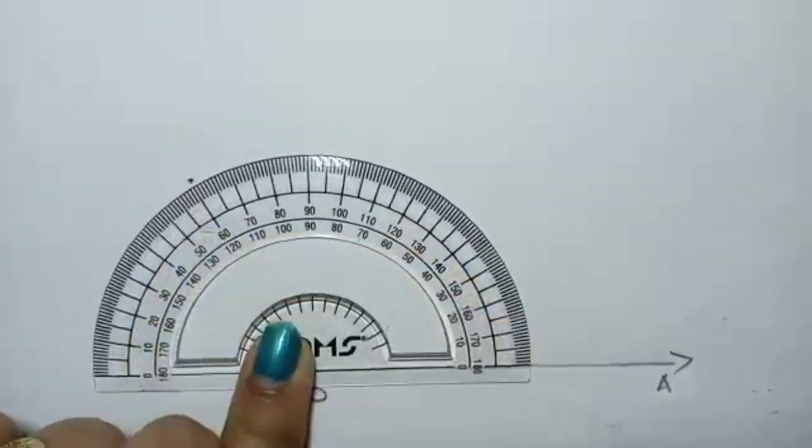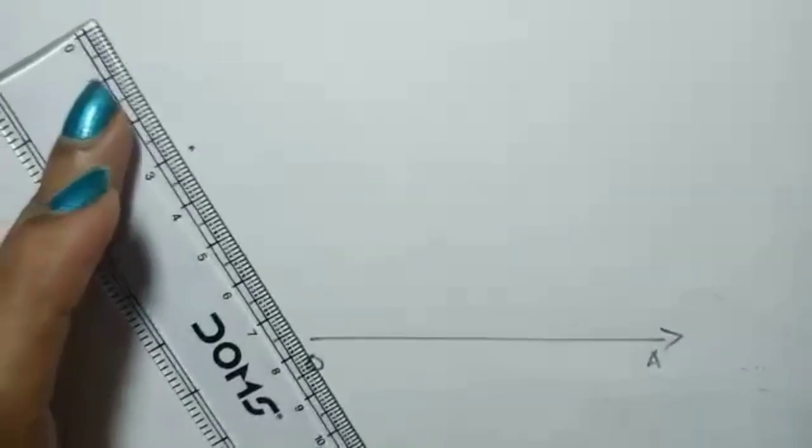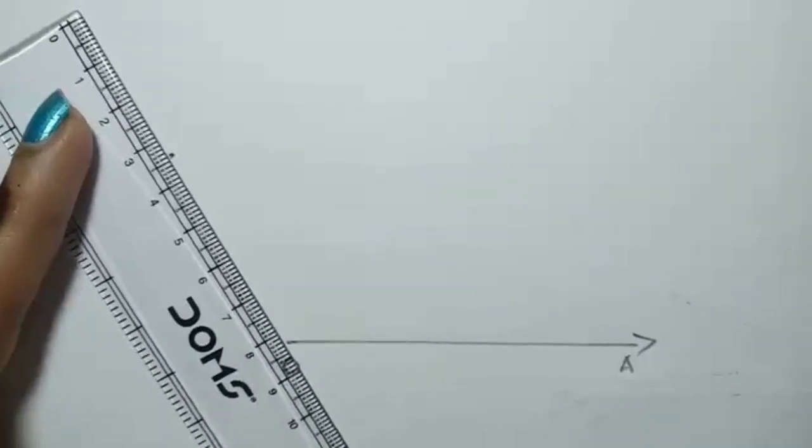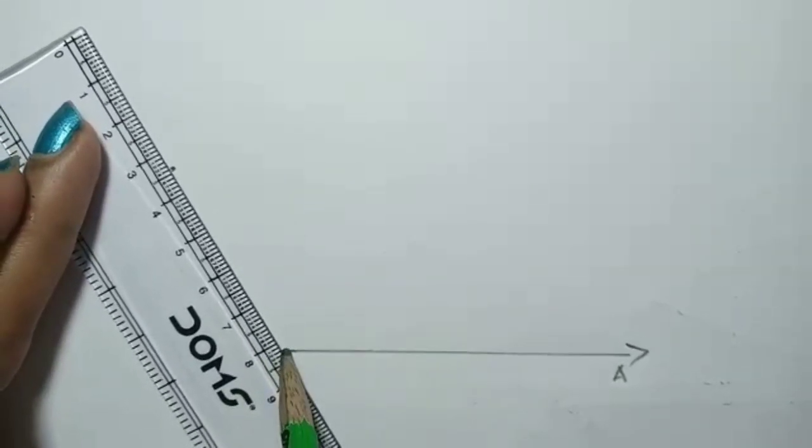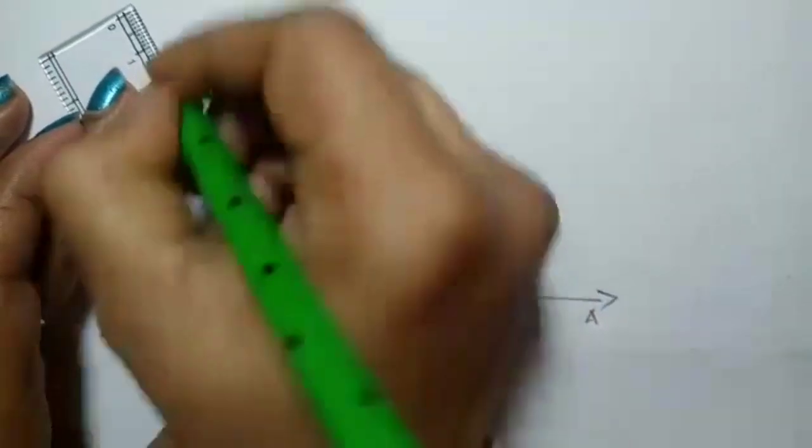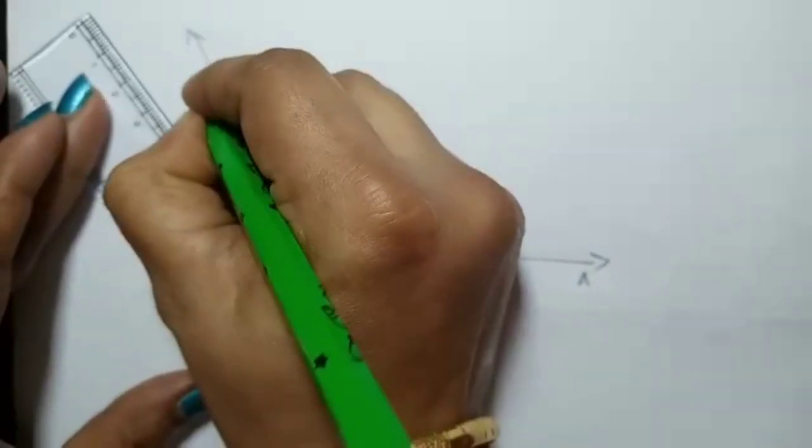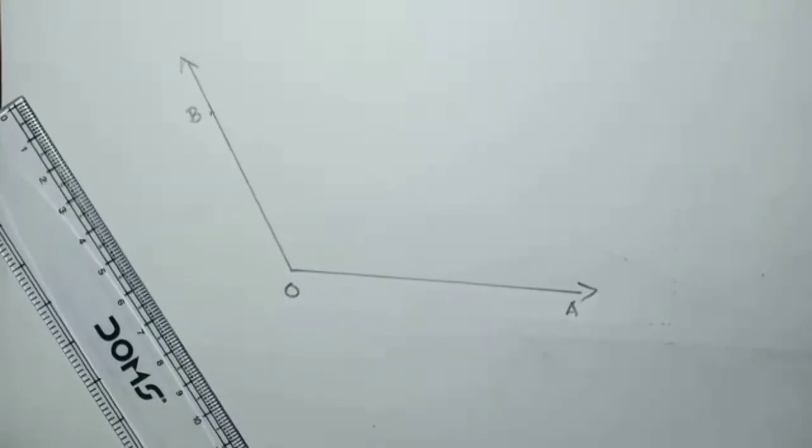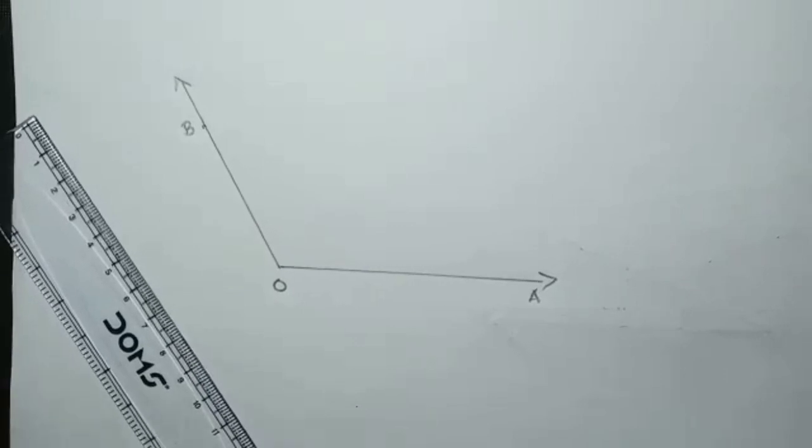Yeah, now you can connect that point with O like this. Okay. So this point I am marking as B. Okay, now we are going to bisect this one. So for that,